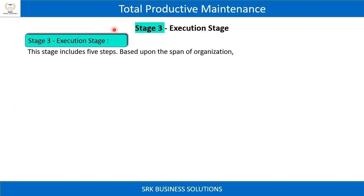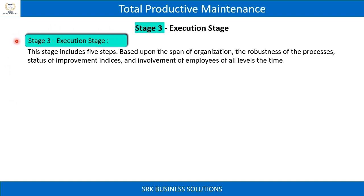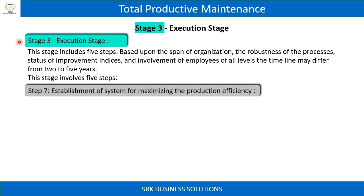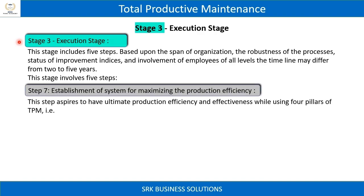Stage 3 is the introduction execution stage, which includes five steps. Based upon the span of the organization, the robustness of processes, status of improvement indices, and involvement of employees at all levels, the timeline may differ from two to five years.